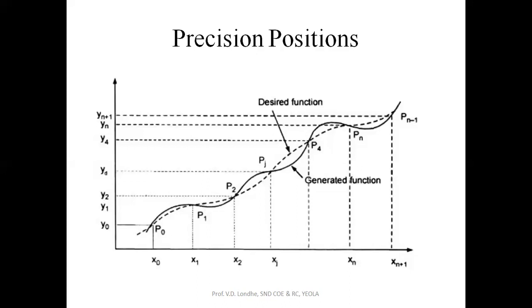The frequency of agreement is less compared to the initial part. This is the basic difference between practical and theoretical values. These points are called precision points, and for these precision points, whatever the position of the links for that respective mechanism will directly give you the precision positions. So first we get the precision points and then from those precision points we get the precision positions.